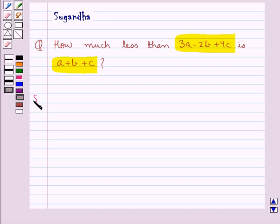Let's move on to the solution now. We have to find out how much less than 3a minus 2b plus 4c is a plus b plus c.